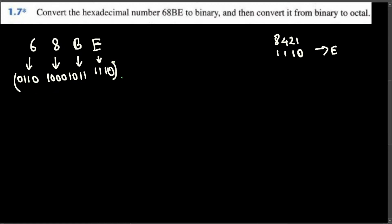And this is the conversion of hexadecimal number to binary. Now if you want to convert from binary to octal, what you have to do is first let's group them together: 0110 1000 1011 1110. If you want to convert from binary to octal, we have to take 3 numbers at a time from right to left.